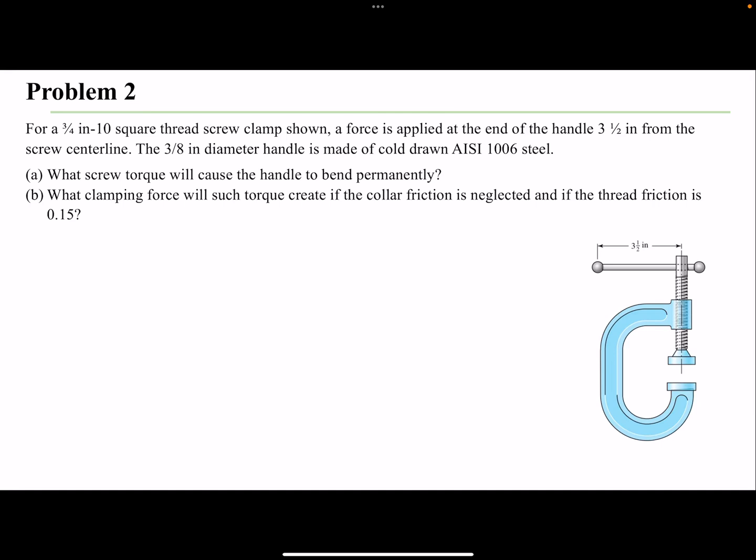Hello everyone, in this video we're gonna solve another example for power screw. For a 3/4 in-10 square thread screw clamp shown, a force is applied at the end of the handle 3 1/2 inches from the screw centerline. The 3/8 inch diameter handle is made of cold drawn AISI 1006 steel.